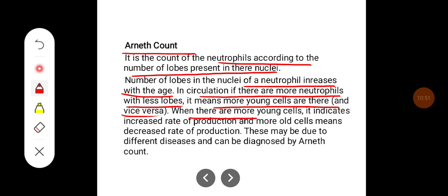When there are more young cells, it indicates the increased rate of production, and more old cells means decreased rate of production. These may be due to different diseases and can be diagnosed by Arneth count. Arneth count is the counting of the lobes.